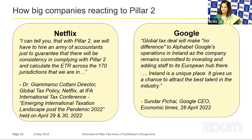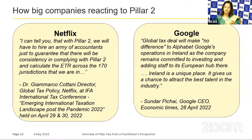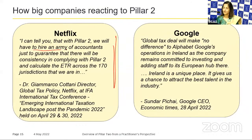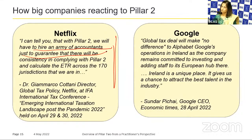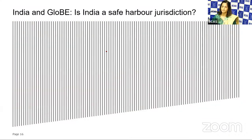The compliance burden is amazing. Even if you do not have any tax liability — say an Indian group with strong presence in Malaysia with strong substance — the compliances will still have to be done. As the Netflix CEO said, you have to hire an army of accountants just to guarantee consistency in compliance. Whether or not you trigger any top-up tax is not so much the point — it is like filing a return of income in India even if you have incurred losses. This compliance will have to be done.